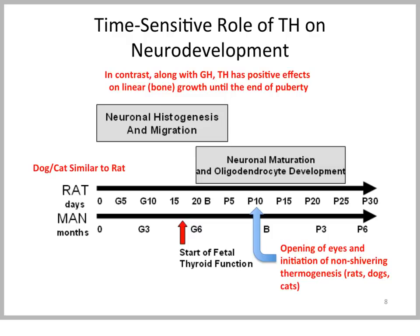This graph shows a timeline for neurodevelopment, comparing the rat to humans — dogs and cats are similar in pattern though not timeline. Months are on the human axis and days on the rat axis. There are homologous events: neuronal histogenesis and migration early on in the first and second trimester, and then neuronal maturation and oligodendrocyte or myelin-producing cell development occurring in the third trimester and after birth.